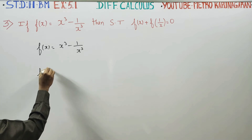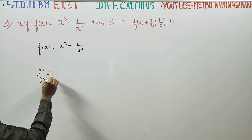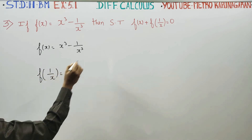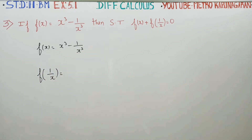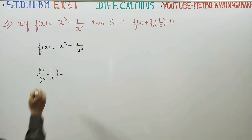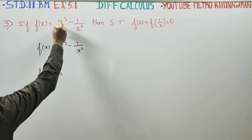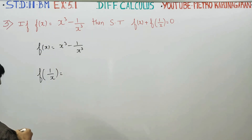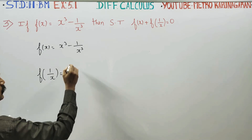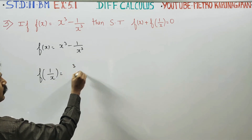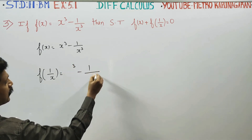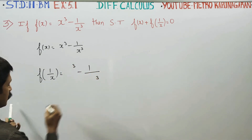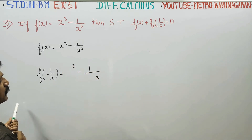Next, we need to find f of 1 by x. To find f of 1 by x from the original sum, wherever x appears, we substitute 1 by x. In the cube terms, we replace x with 1 by x.